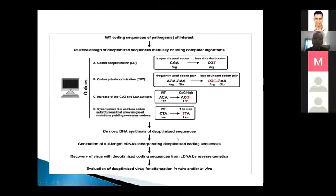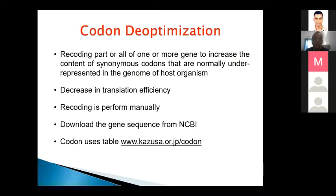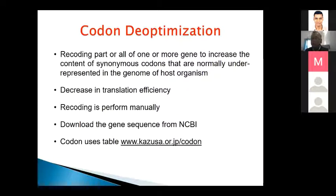These de-optimized sequences require de novo synthesis of the full-length sequence, which is then incorporated into the virus. For viruses, the whole genome can be synthesized because their size is small. For bacteria it is more difficult since the genome is large, so typically only one or a few genes are targeted.